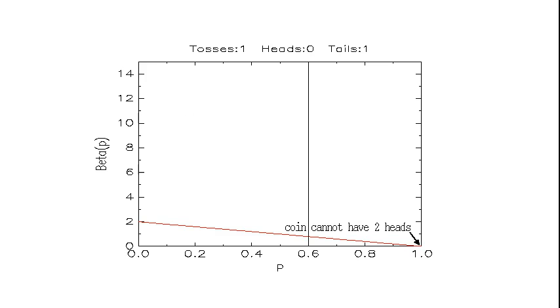The first toss is a tail, so the coin can't have two heads, and so the probability for P equal to one goes to zero.